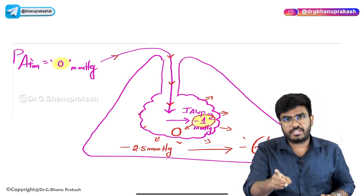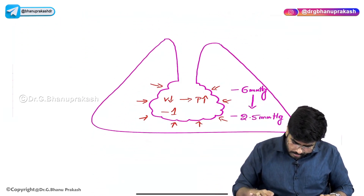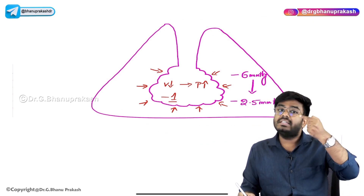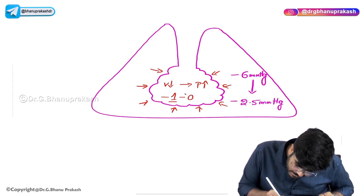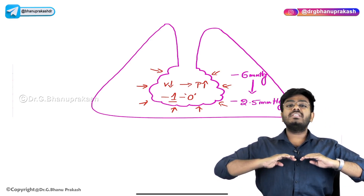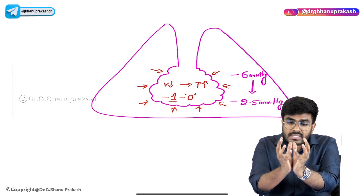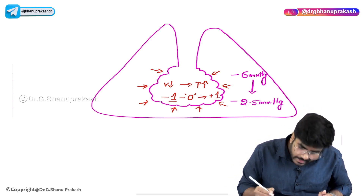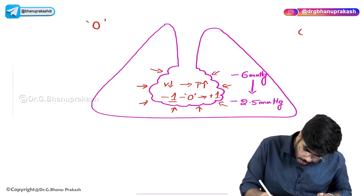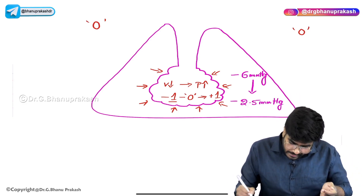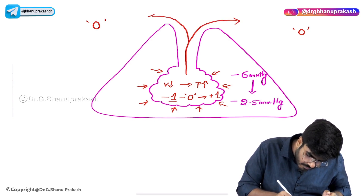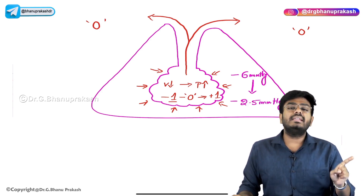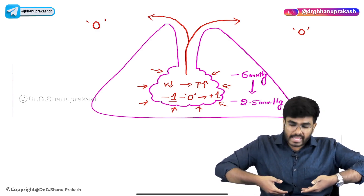At the start of inspiration, the intra-alveolar pressure is minus 1. With entry of air, it becomes 0 again. During expiration, the diaphragm is relaxing and the chest wall is collapsing, so the alveoli are also getting smaller. The pressure inside the alveolus becomes plus 1 mmHg. Outside is always 0 mmHg (atmospheric pressure). Since plus 1 is greater than 0, air starts to move out.